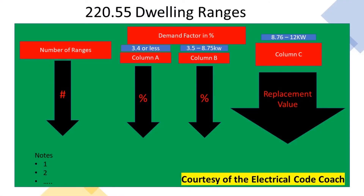When we get to Table 220.55, we're going to read the black bold heading at the top of the table to make sure that we're in the right table. Then starting on the left-hand side, we're going to find our number of ranges. We're going to notice that there are three different columns, really in two different groups. Column A and column B are grouped together under the demand factor in percentage column. Column A and column B are multipliers — they're actual demand factors. But column C is a replacement value, and you'll understand more of what that means as we get farther through this video.